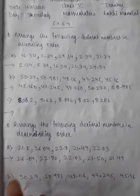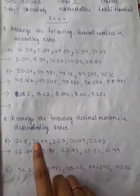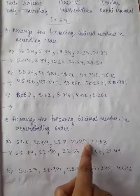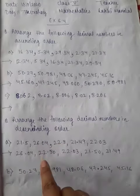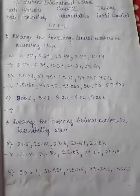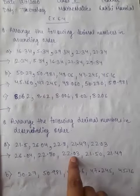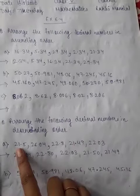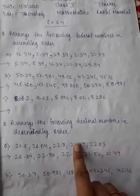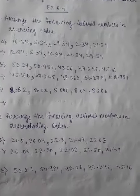Next is descending order. Descending order means large to small. Now, let's see the numbers. We will write 26.04, then 22.80, then 22.98, then 21.50, and 21.49. In the same way, you have to do this question. Okay, thank you.